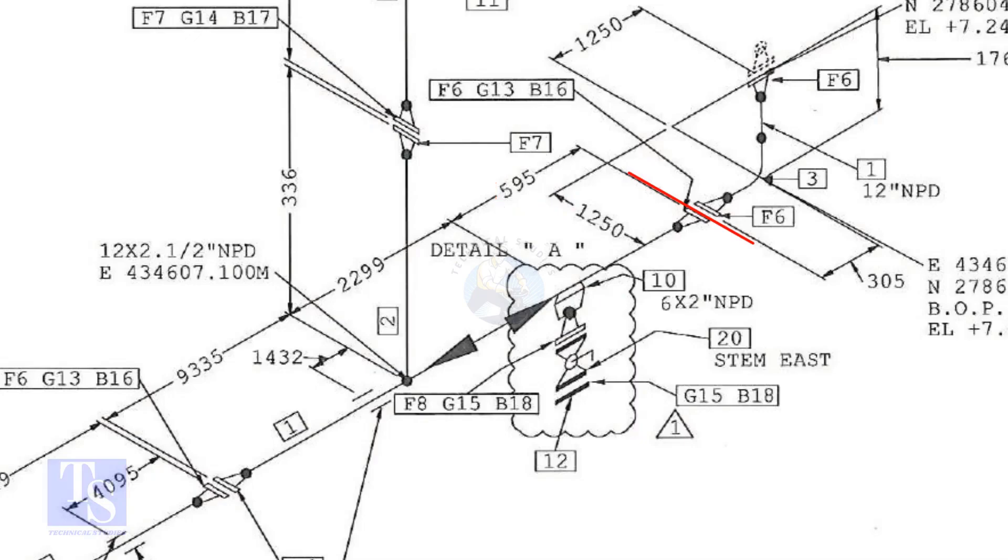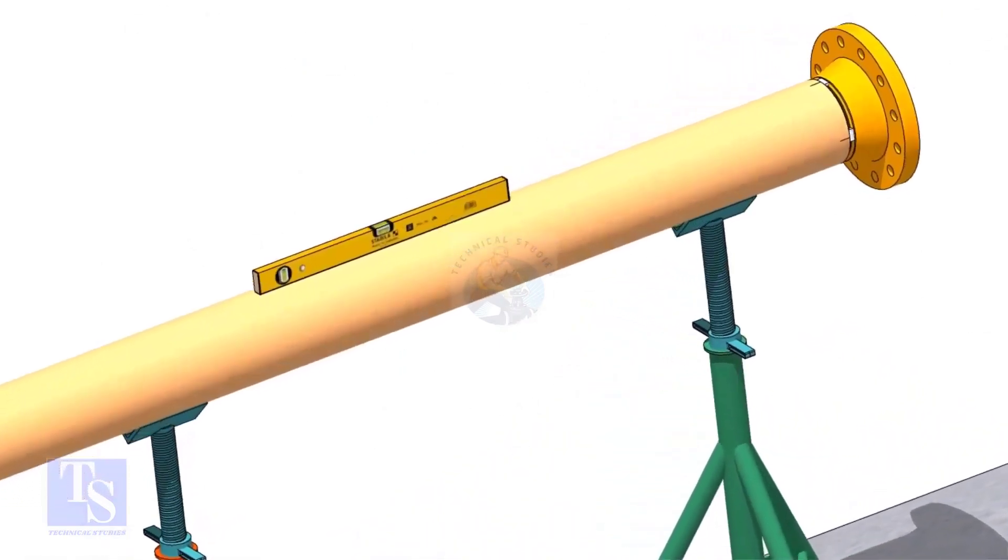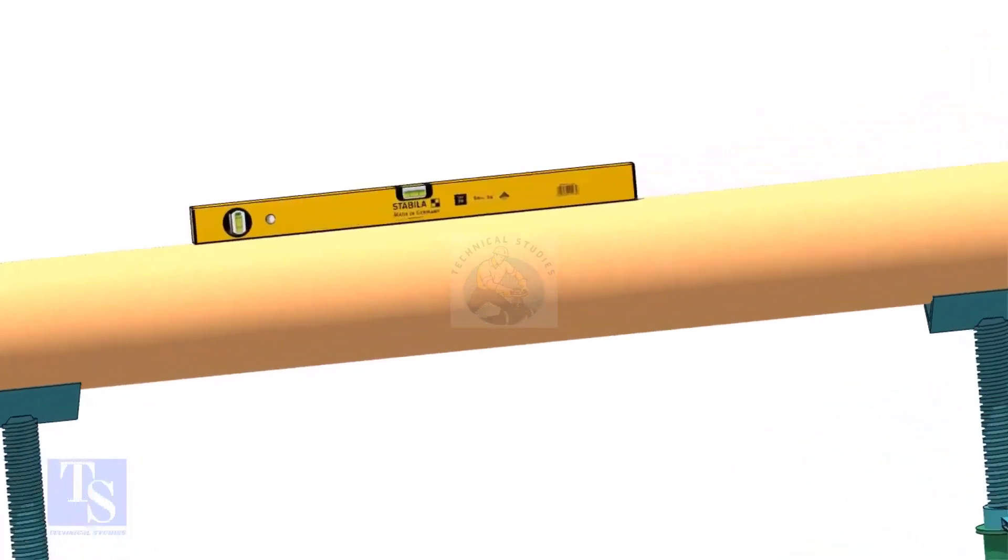Now we are going to mark this distance on a pipe with a flange fitted on it. Level the pipe and the face of the flange.